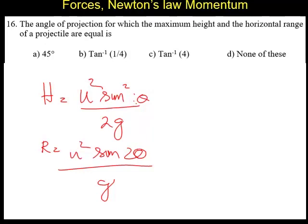H is U square sine square theta by 2g, and R is U square sine 2 theta by g. They are telling both should be equal. H should be equal to U square sine 2 theta by g. If both are equal, then what will happen?